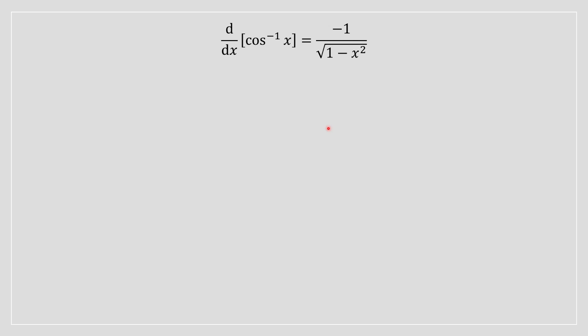Oi lads, it's Dan here today bringing you a lovely video on why the derivative of arc cosine is equal to negative 1 divided by square root of 1 minus x squared. So before we jump into this, I want you to drop a like and subscribe and let's get right into it then.